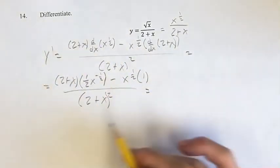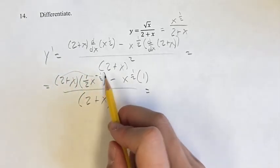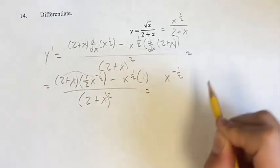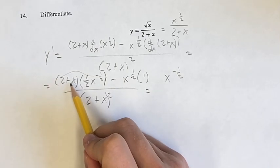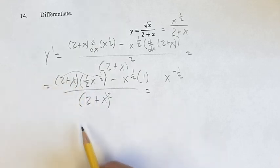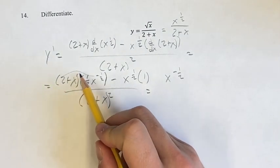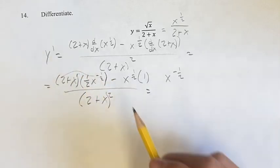Okay. Simplifying this, we get 2 times 1 half is 1 x to the negative 1 half. Plus x times x to the negative 1 half. We're multiplying terms with the same base, we're going to add their exponents. So we get x to the first power, 1 minus 1 half.